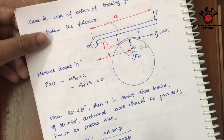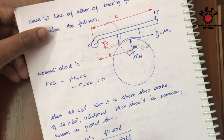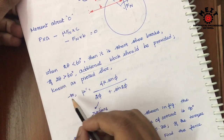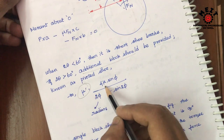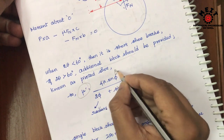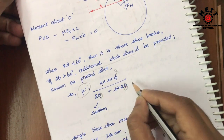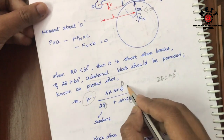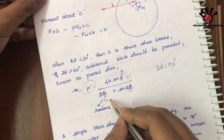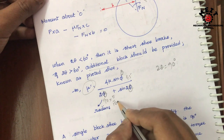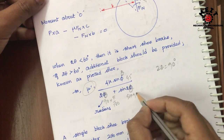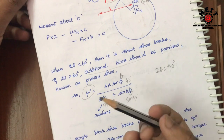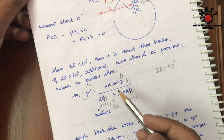Suppose 2θ is equal to or greater than 60 degrees — pressure is not uniform, so we have to add some additional block and calculate the mu dash value. The mu dash formula is: mu dash equals 4μ sinθ divided by (2θ + sin2θ). For θ equal to 45 degrees, sin45 and 2θ equals 90 degrees, so sin2θ equals sin90 degrees. Substitute to get mu dash.